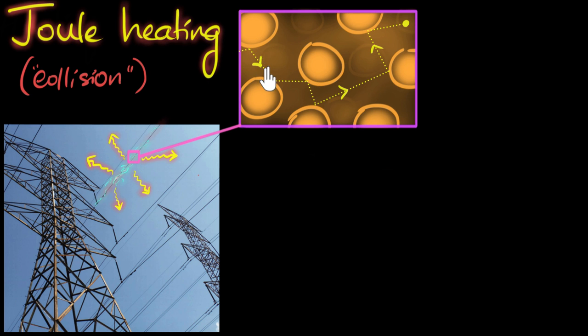And during the collision, these electrons transfer some of their energy to the atoms. Think about it. It's like a very small stone coming and hitting a big stone. It transfers some energy to that big stone, isn't it? Similarly, the electron transfers some energy to the atoms.